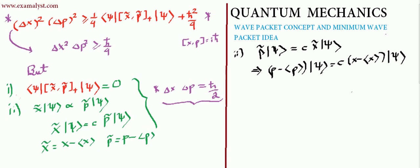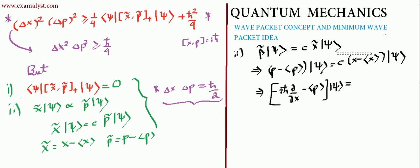Now we substitute the value of p. The momentum operator is −iℏ ∂/∂x, and we keep the expectation value of p as it is. So the entire operator acts on ψ on one side, and the right-hand side remains as it is.